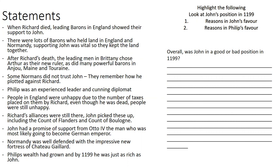Some Normans didn't trust John - they remembered how he had plotted against Richard. Philip was an experienced leader and a cunning diplomat. People in England were unhappy due to the number of taxes placed on them during Richard's reign, and this unhappiness would pass over to John. On the positive side, Richard's alliances were still there - John picked up alliances with the Count of Flanders and the Count of Bologna, plus a promised alliance from Otto, who was most likely going to become the German Emperor.